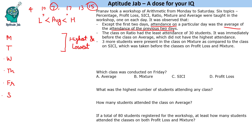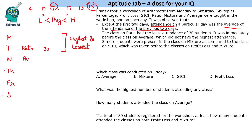That is the important logic to solve this question. Now, it is said that the class on ratio had the least attendance of 230 students, and it was immediately before the class on average, which did not have the highest attendance. So ratio can be on one of these two days — Monday or Tuesday. If ratio is the lowest, then the next class (average) should be highest, but it is saying that average did not have the highest attendance. So the class on ratio must be on Tuesday. This was the class on average — that we can figure out from this.